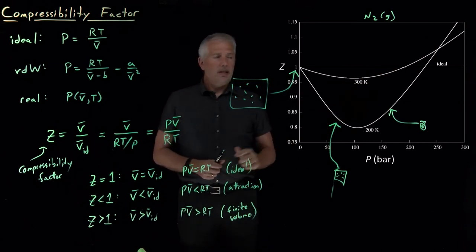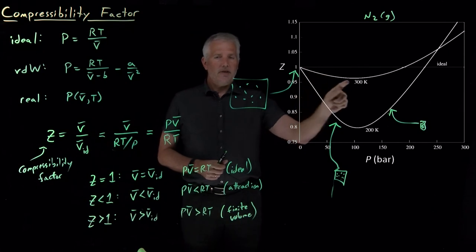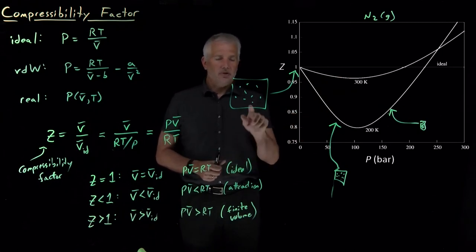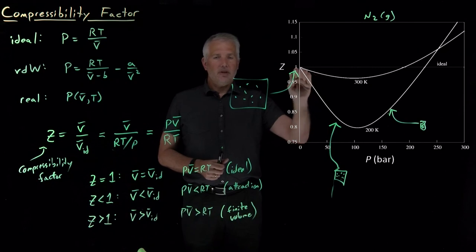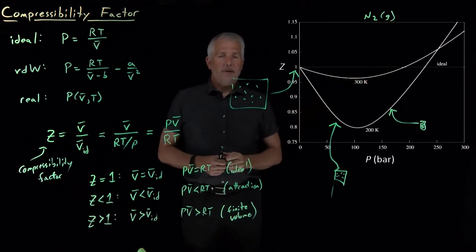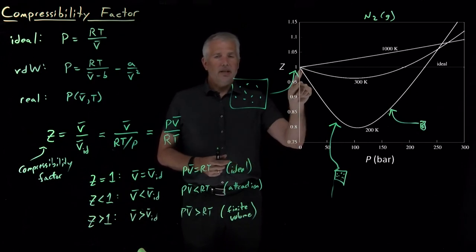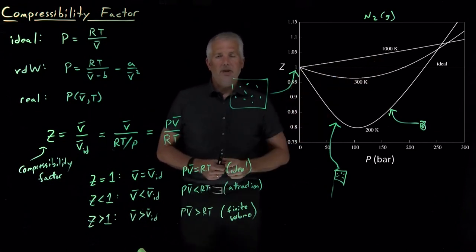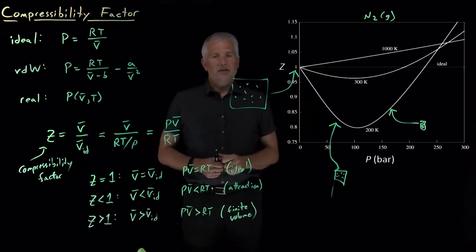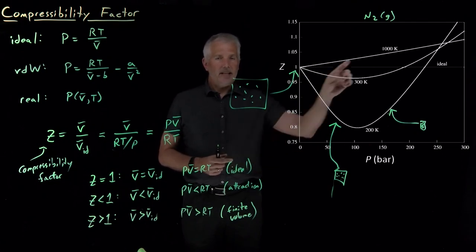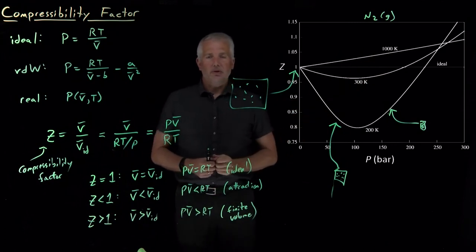That's generally what happens both at 200 kelvin and at higher temperatures like 300 kelvin—at first the attractions between molecules dominate, and then later the finite volume begins to dominate. At the higher temperature of 300 kelvin, the effect of the interactions is weaker than at 200 kelvin because of Boltzmann-type reasons. The interaction is relatively weak, and thermal energy at 300 kelvin is enough to break those molecules apart fairly often. At even higher temperatures of a thousand kelvin, the effect from intermolecular interactions has disappeared completely, and the only deviations from ideality we see are in the positive direction.